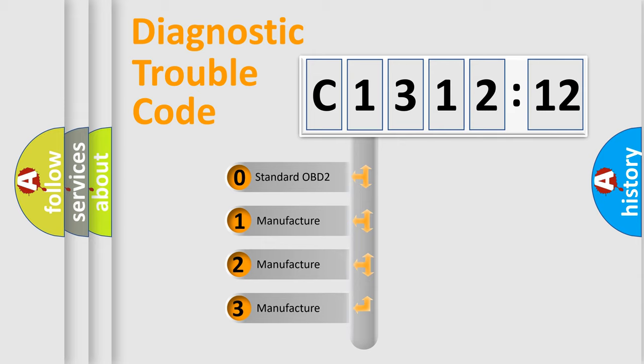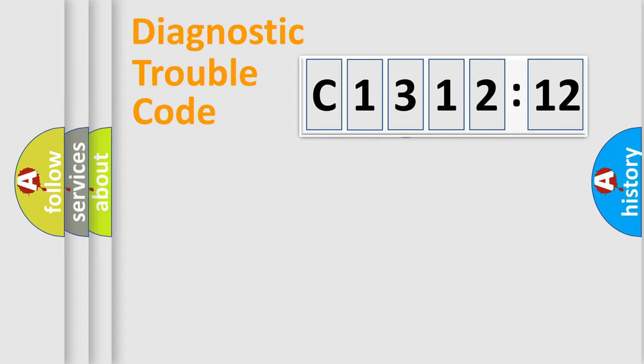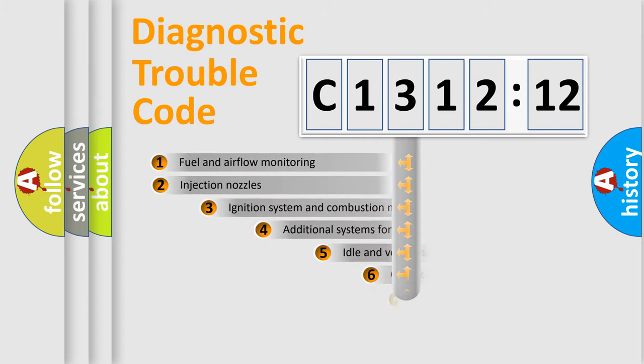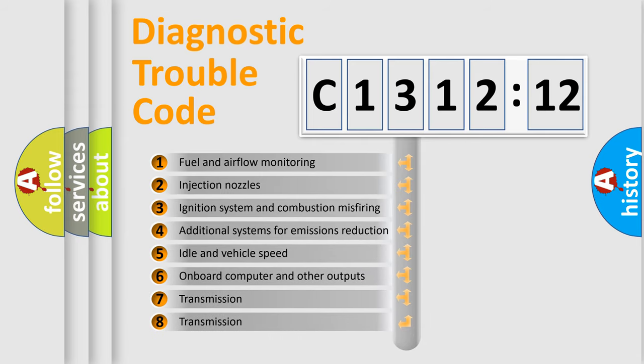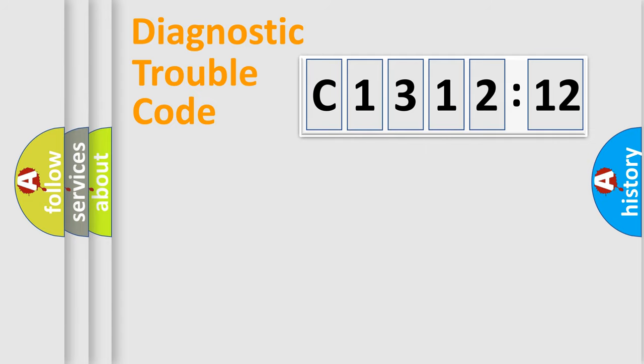If the second character is expressed as zero, it is a standardized error. In the case of numbers 1, 2, or 3, it is a more precise expression of the car-specific error. The third character specifies a subset of errors. The distribution shown is valid only for the standardized DTC code.